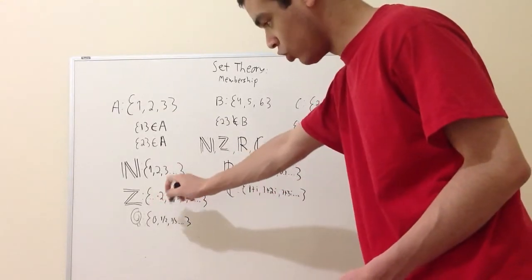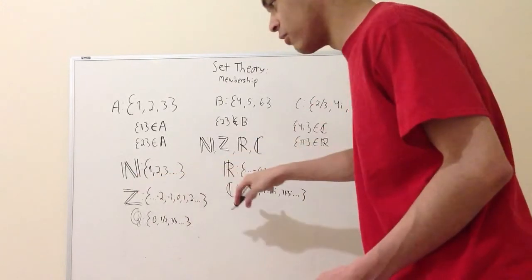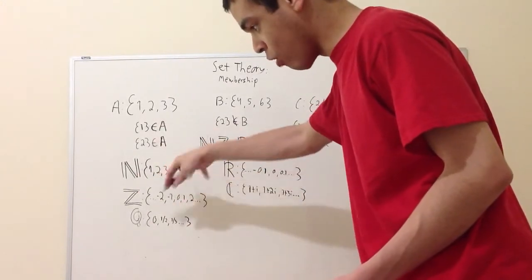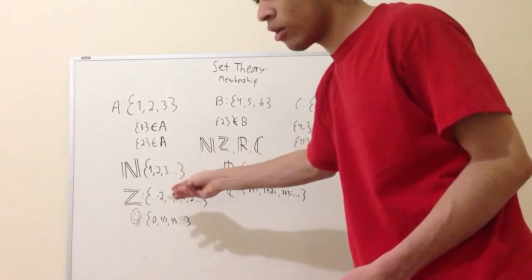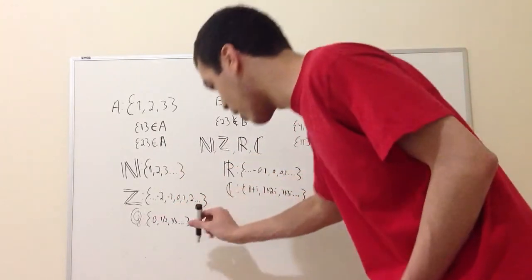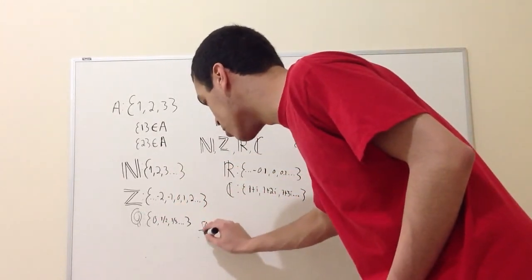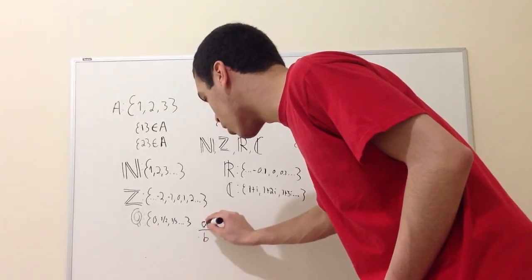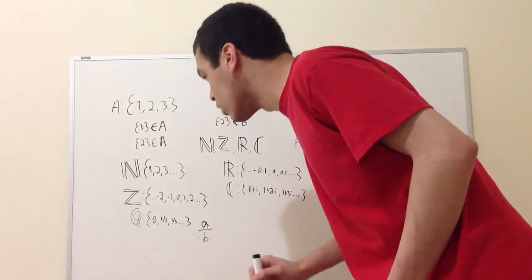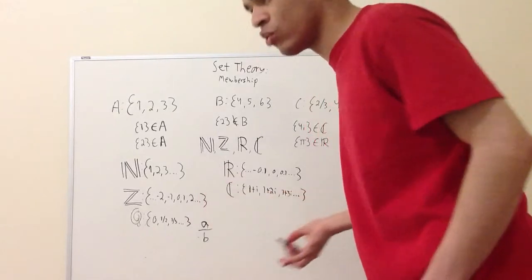Then you have integers, which are negative infinity to positive infinity. And we have rationals, which kind of are all of those, plus rational numbers, which is any number that can be written as A over B, where A and B are both natural numbers. So that's what rationals are.